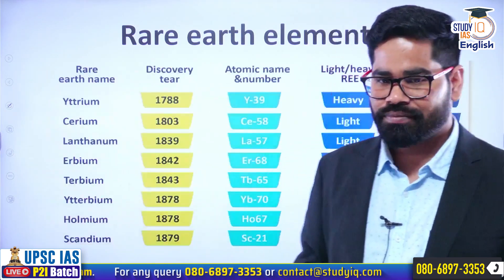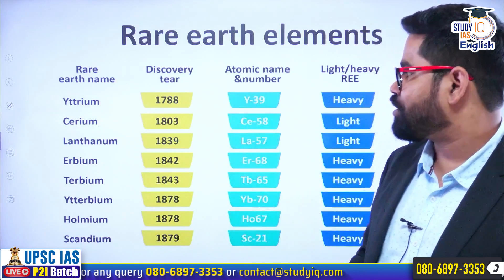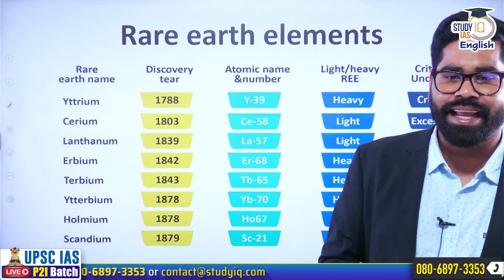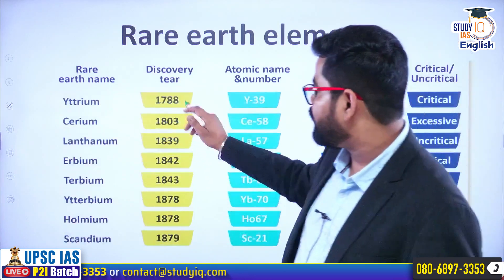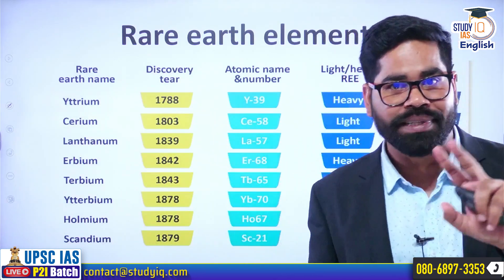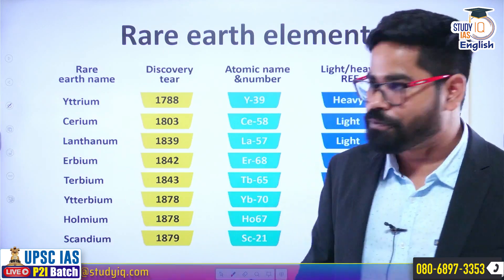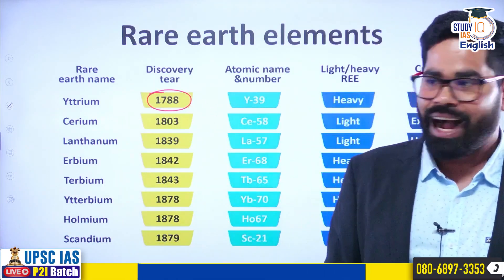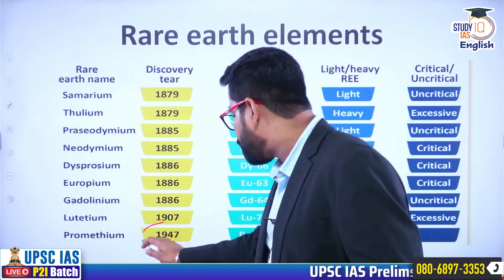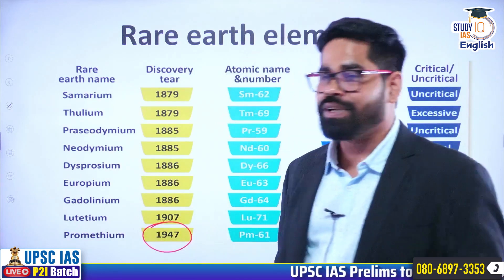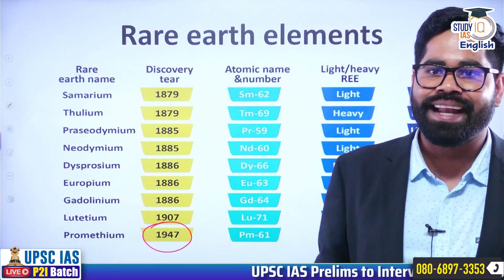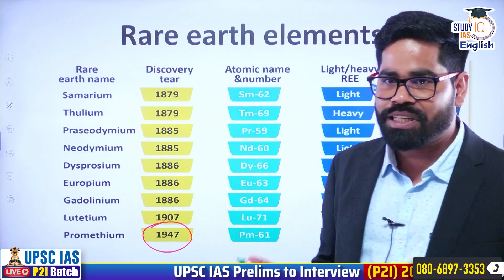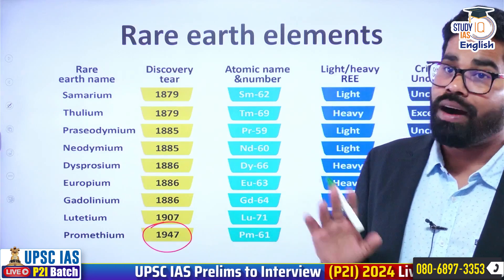Some of the names include yttrium, cerium, and lanthanum. This is not something which has been recently discovered — the first of them was discovered in 1788, and the most recent one being promethium, which was discovered in 1947.